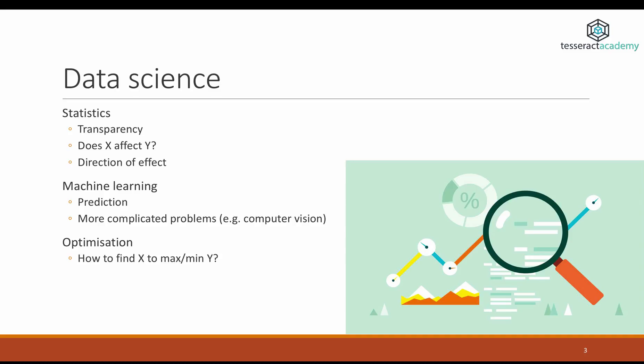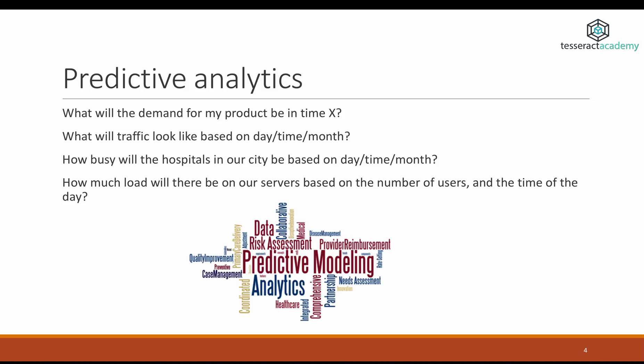Optimization, on the other hand, is a field that deals with the question of how you can find the right settings, how you can find the right values for some parameters of a model or a system in order to maximize or minimize a goal. So let's see some examples of predictive analytics applications in order to understand the differences a bit better.